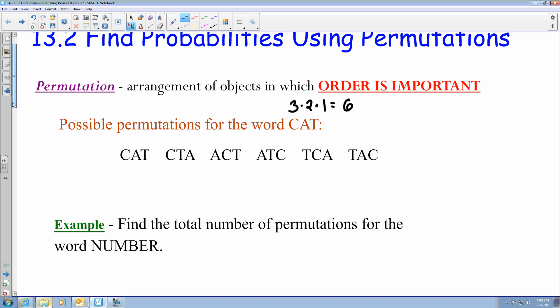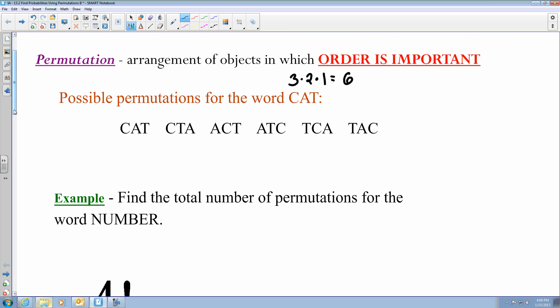So now if we go with NUMBER, we got six objects for the word NUMBER. So then we go six times five times four times three times two times one, which then that ends up equaling 720, which that would be a much larger data set than CAT. So luckily we have this shortcut to determine how many total number of permutations there are.